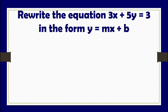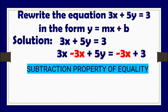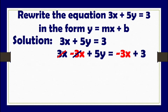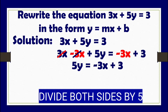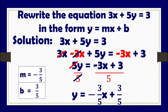First example: rewrite the equation 3x plus 5y equals 3 in the form y equals mx plus b. First, we utilize the subtraction property of equality and subtract both sides by 3x to eliminate it from the left side. The simplified equation becomes 5y equals negative 3x plus 3. Then we divide both sides by 5. The final equation is y equals negative three-fifths x plus three-fifths, where slope m equals negative three-fifths and y-intercept equals three-fifths.